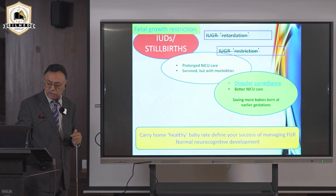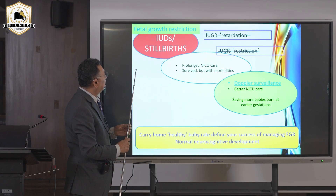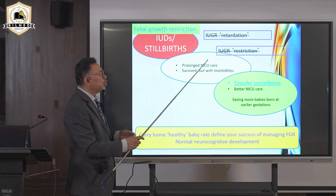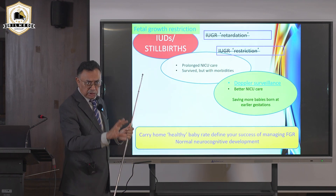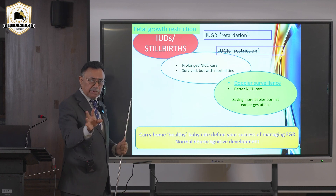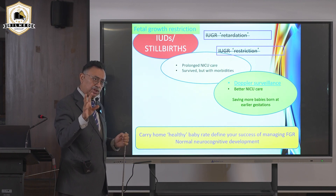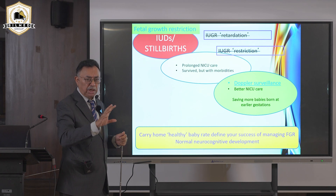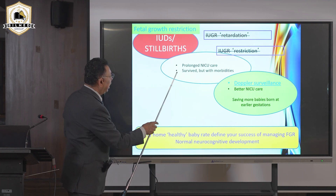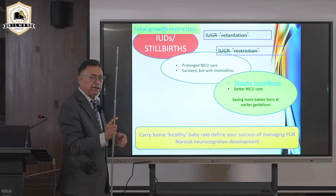Fetal growth retardation leads to IUDs and stillbirth. The term IUGR is no longer used — it is now called fetal growth retardation or fetal growth restriction (FGR). You should not write IUGR at all; that is the older term. These babies need more ICU care and may survive with morbidities.